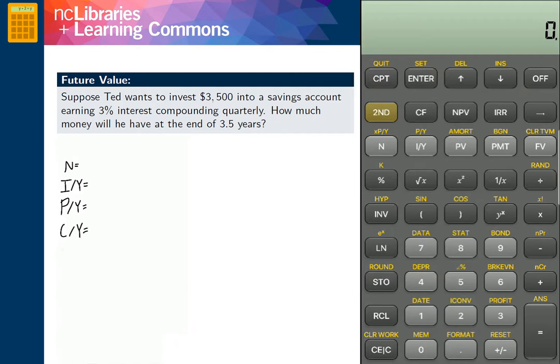the present value, PV; the regular payment, PMT; and the future value, FV, which we hope to determine with our calculators.